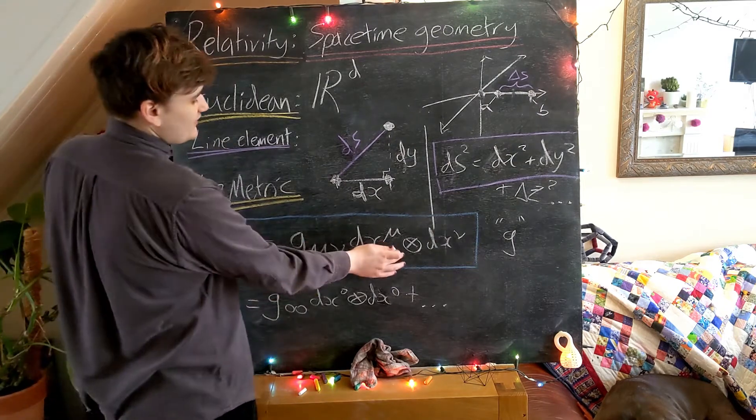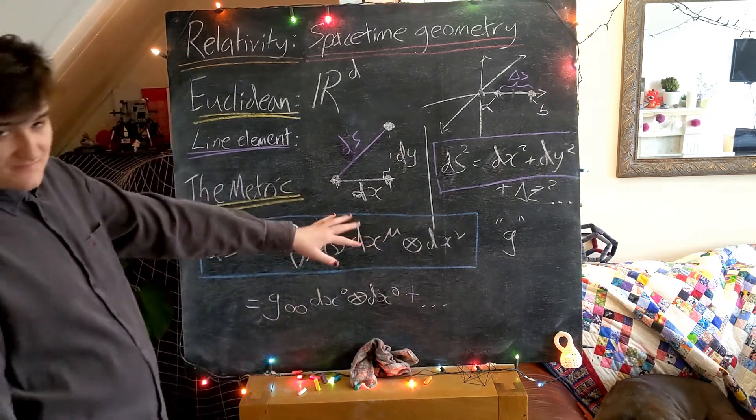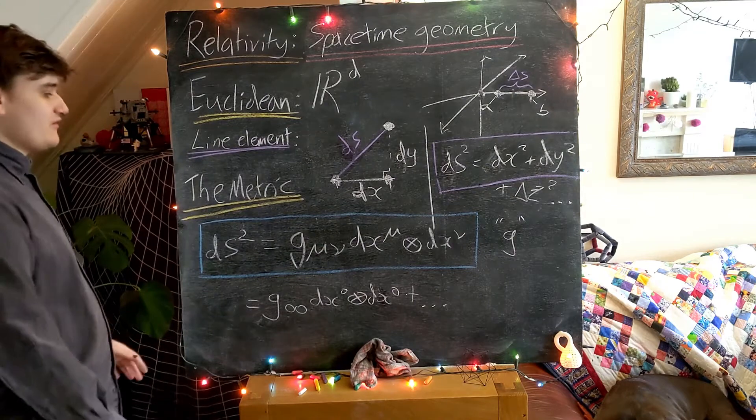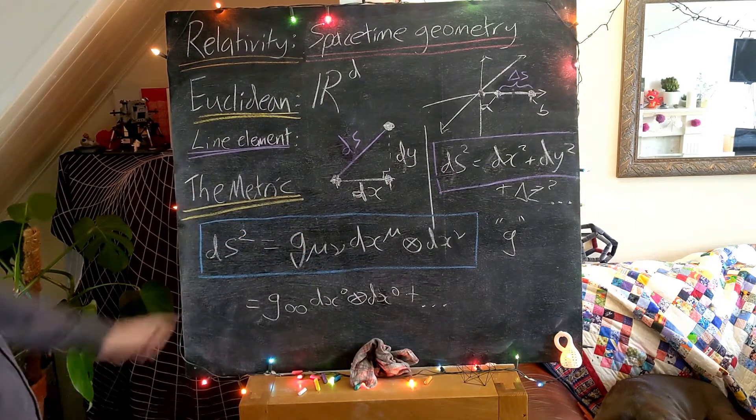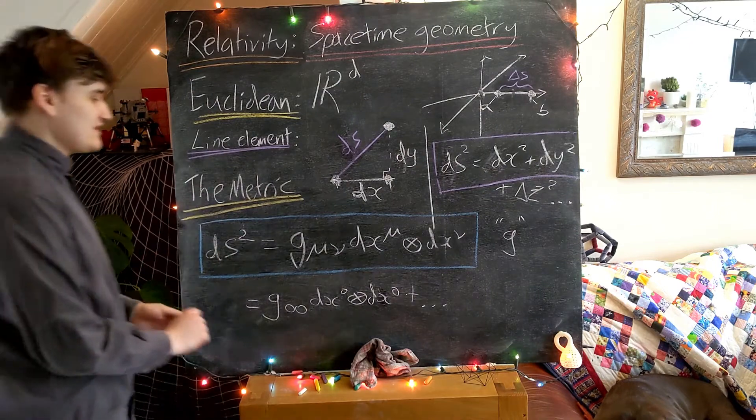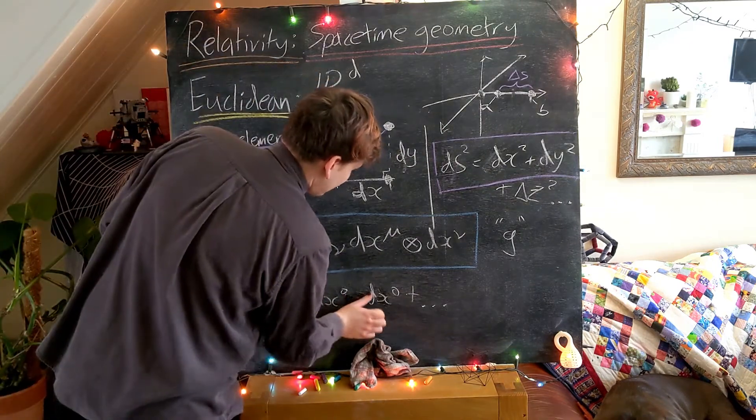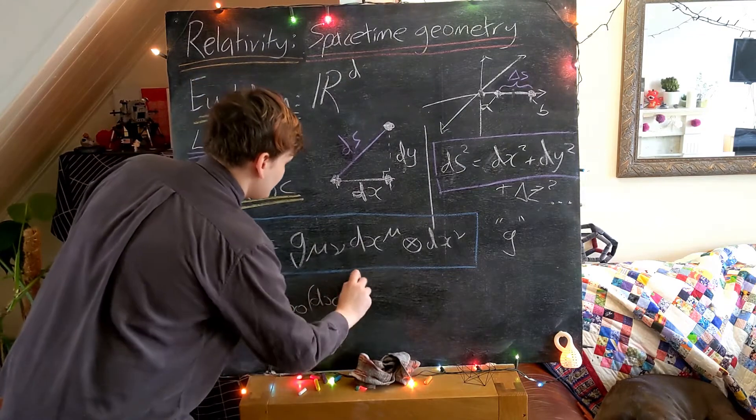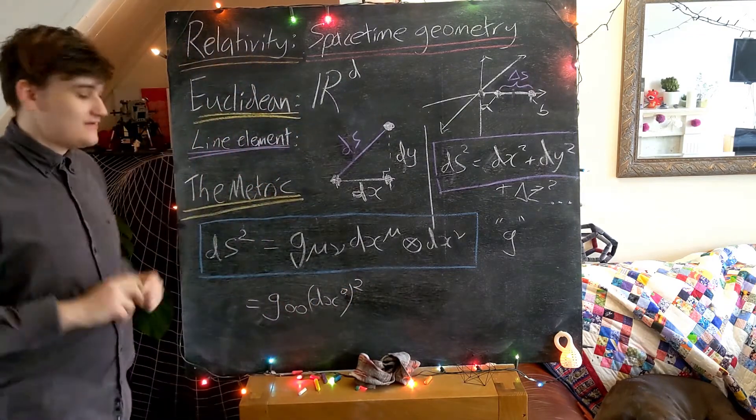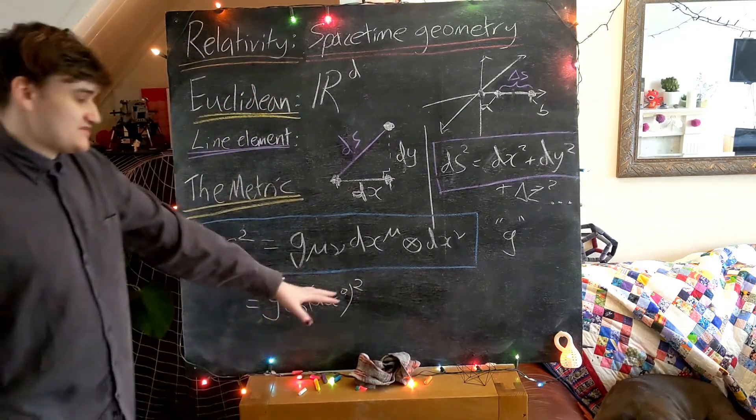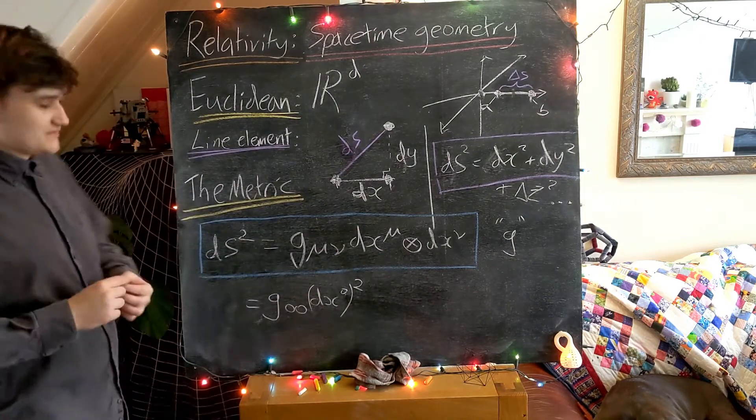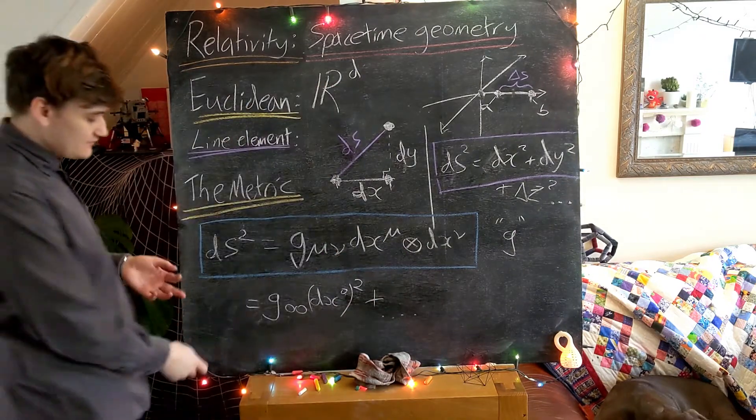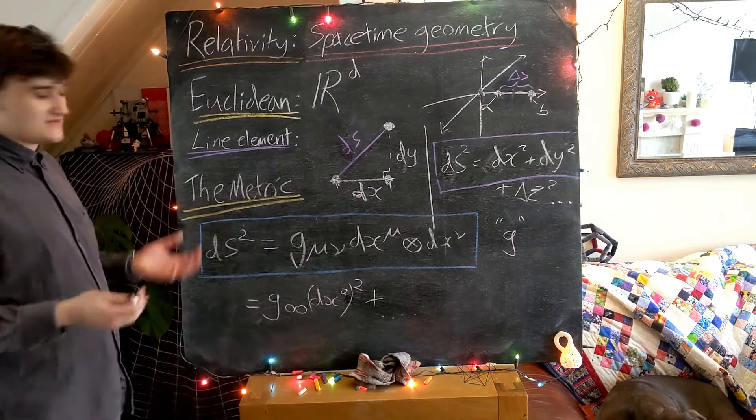And now, don't worry if the appearance of the tensor product is throwing you off. I'm just putting it there for full formality. We usually like to omit it and we can just instead write this as dx0 squared. The squared is really just meaning, okay, put a tensor product symbol between these two one forms. Okay, so now we see, looking at this expansion, which I've started to write here...